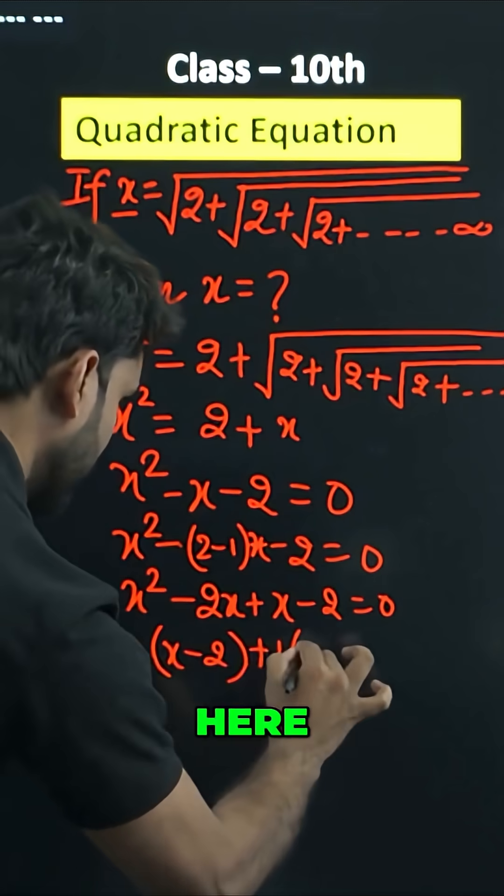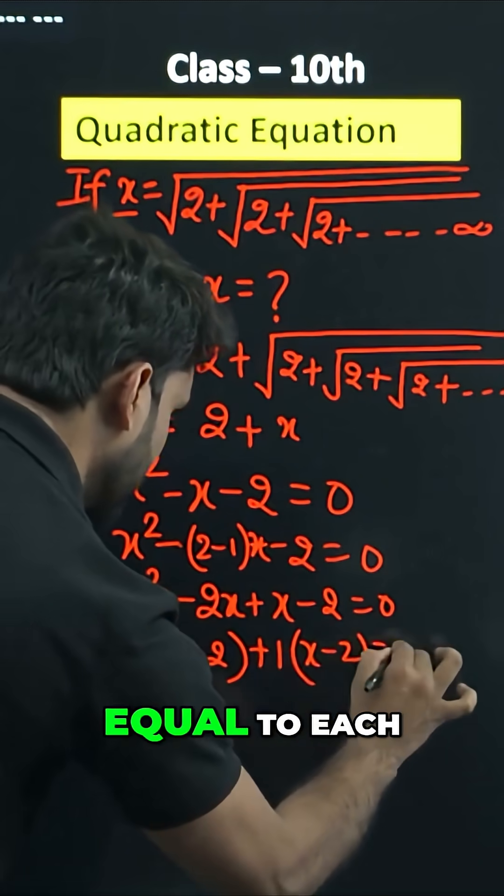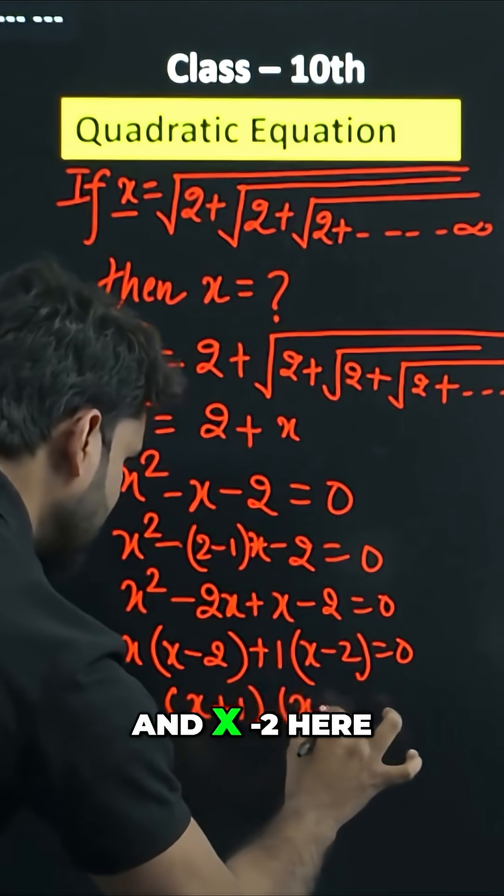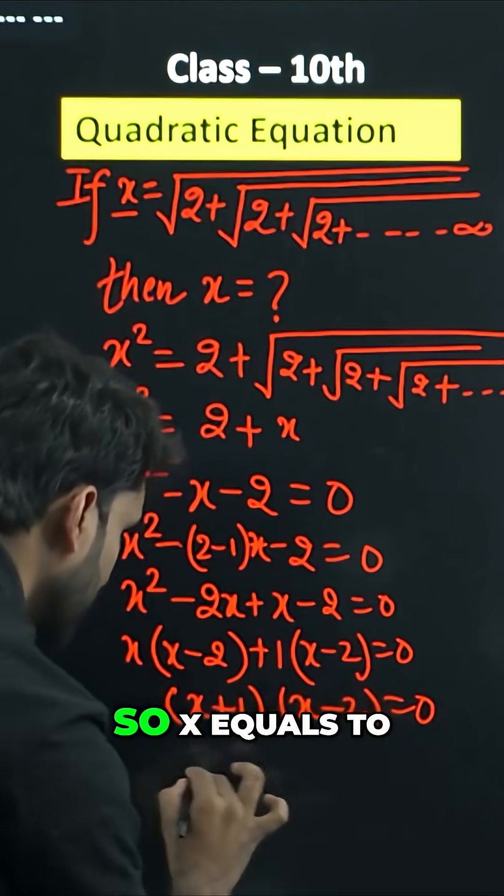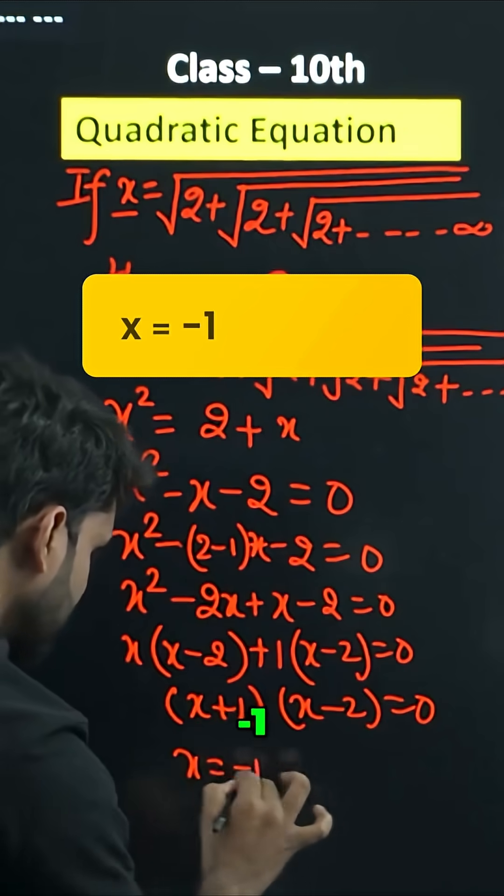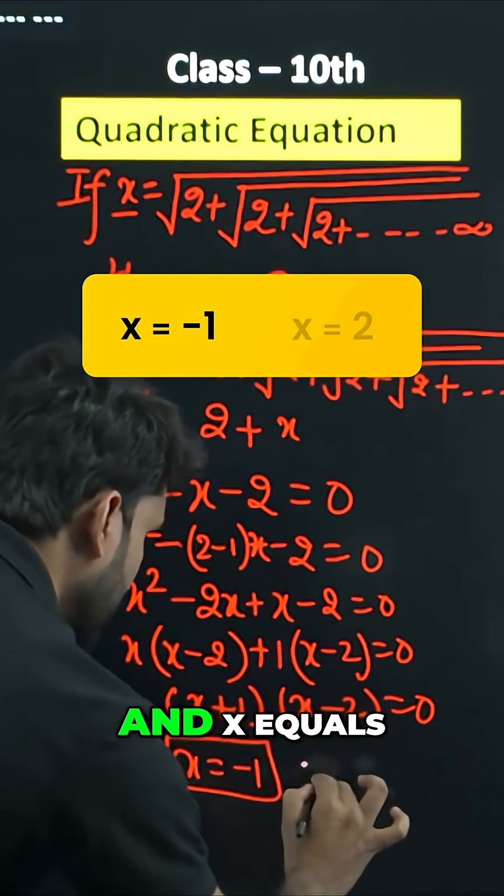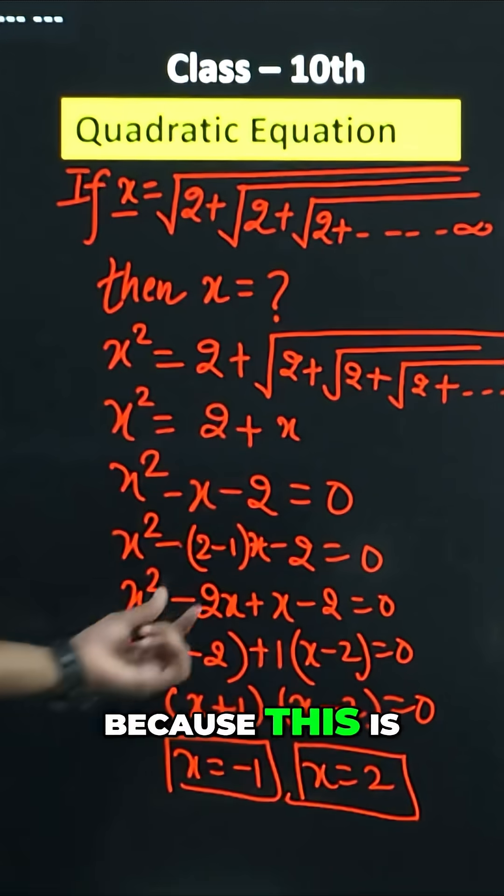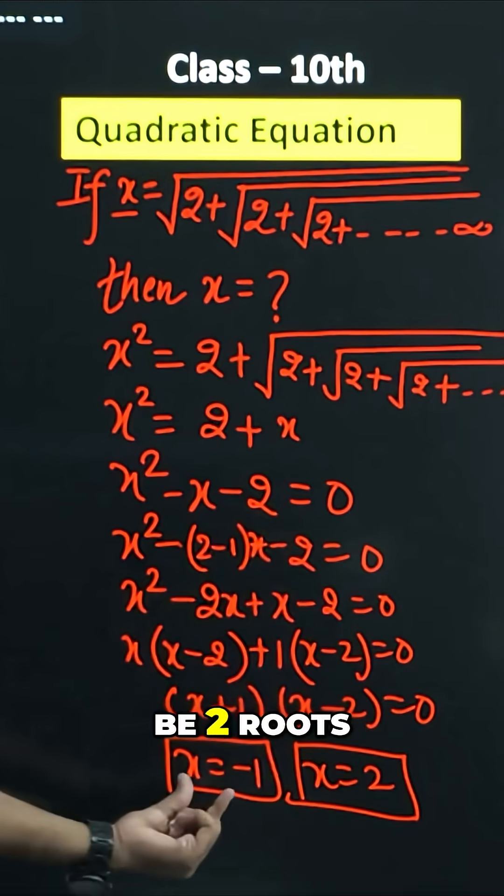We have to take 1 as common here because both brackets must be equal to each other. So x plus 1, x minus 2. Therefore x equals to minus 1 first value, and x equals to positive 2. This is the answer because this is the quadratic equation, so there will be two roots, two zeros.